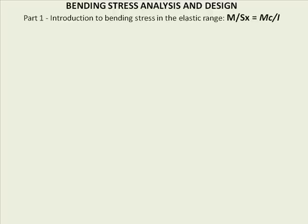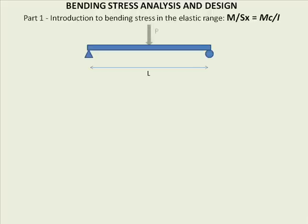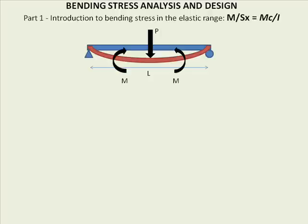We can start by asking ourselves: what is bending? If we take a structural element with a length associated with it, like a beam, and we apply a force P perpendicular to the member, we will deform the member — it goes from the blue shape to the red deformed bent shape. In essence, we've applied a torque, a rotational force — a moment represented by M — to an axis perpendicular to the axis of length.